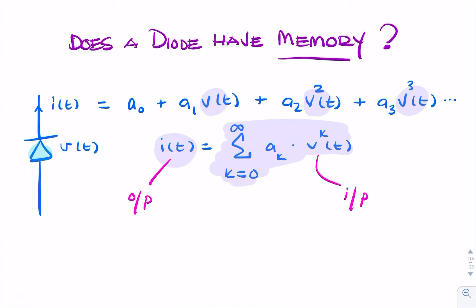So if you look carefully, we only have a function of t. We don't have t minus anything or t plus anything. It's all just a function of t. So even though it might initially look like it has memory, it's memoryless. So a diode has no memory.